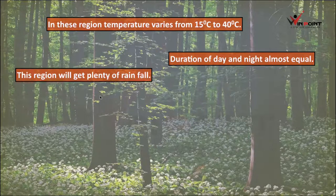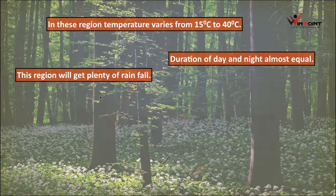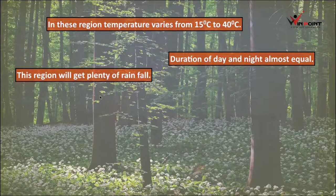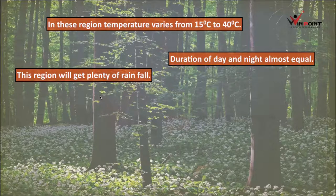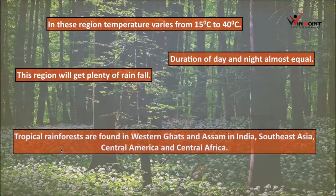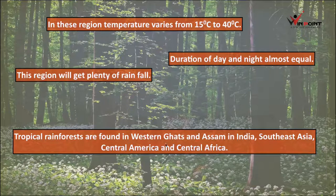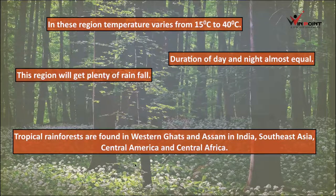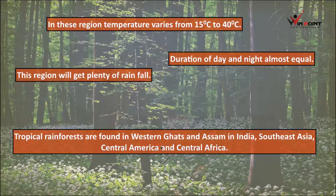The region will get plenty of rainfall. Because of this heavy rainfall, living organisms can easily survive here. Tropical Rainforests are found in Western Ghats and Assam in India, Southeast Asia, Central America, and Central Africa.